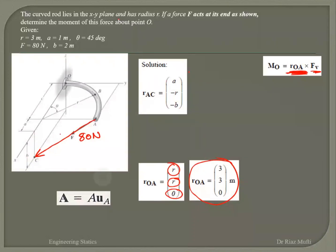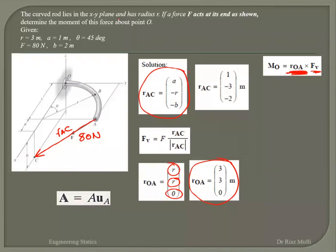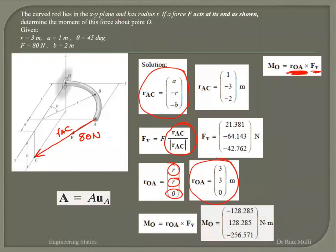So I've got my r_AC. I've got my position vector here. And I can easily convert it to a unit vector. So this is now a unit vector, which is then multiplied by the force. And I can get my force vector out. The rest is simple. Is that clear to everyone?